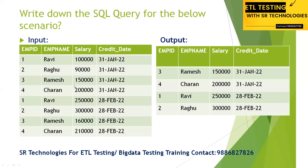For January, the top two salary employees are Ramesh and Charan. Moving to February 2022, Ravi is getting higher salary, and Ragu also. So Ravi and Ragu are the top two employees earning the highest salary in February.